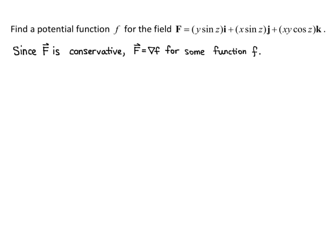Since capital F is conservative, capital F equals ∇f for some function lowercase f. So in other words, for some potential function, the vector field we're given is a gradient field. This means that capital F equals (∂f/∂x)i plus (∂f/∂y)j plus (∂f/∂z)k for the potential function lowercase f.